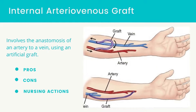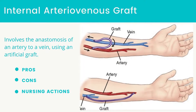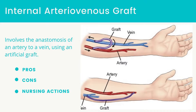An internal arteriovenous graft may be used for chronic dialysis patients that do not have adequate blood vessels for a fistula. The procedure involves the anastomosis of an artery to a vein using an artificial graft. The graft can be used two weeks after insertion. Complications of the graft include clotting, aneurysms, and infection. The pros and cons are the same as an internal arteriovenous fistula.